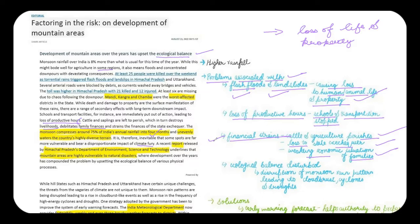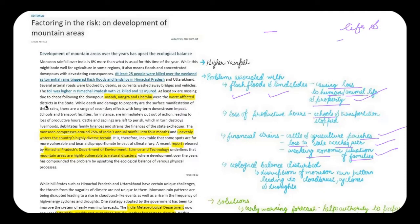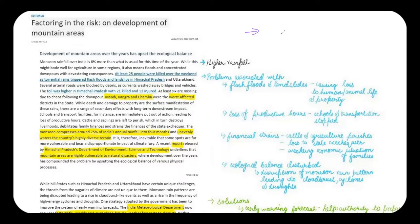A recent report released by the Himachal Pradesh Fisheries Department and the Department of Environment Science and Technology underlines that mountain areas are highly vulnerable to natural disasters. Coming to the main aspect of this topic — mountainous areas are more vulnerable to these natural disasters where development over the years has compounded the problem by upsetting the ecological balance of various physical processes. Rapid developmental activities have cut trees and affected wildlife, making these places even more vulnerable.